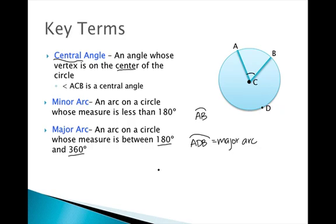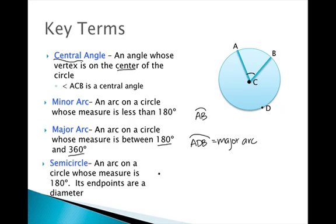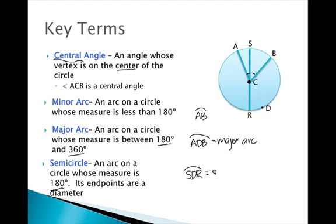We have another special type of arc: a semicircle. By definition, a semicircle is an arc on a circle whose measure is exactly 180 degrees. Its endpoints are going to be a diameter. So if we draw diameter SR, we have semicircle SDR — named with three letters — because its arc measure is 180 degrees.